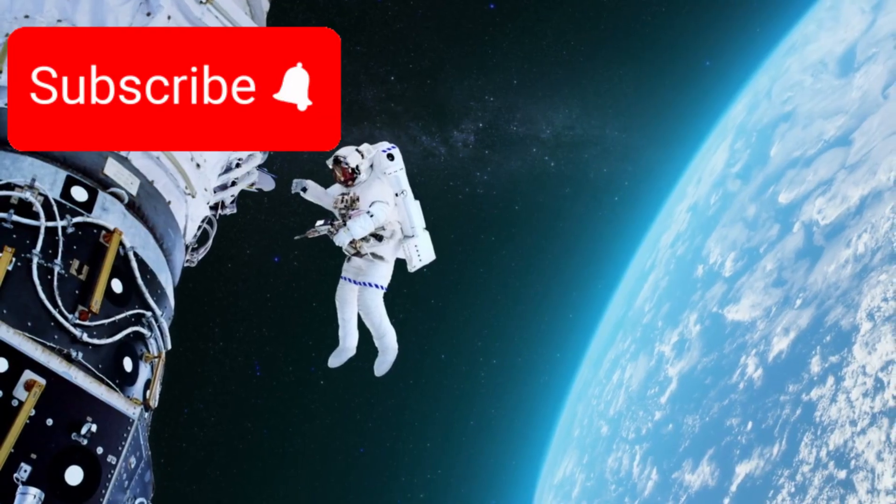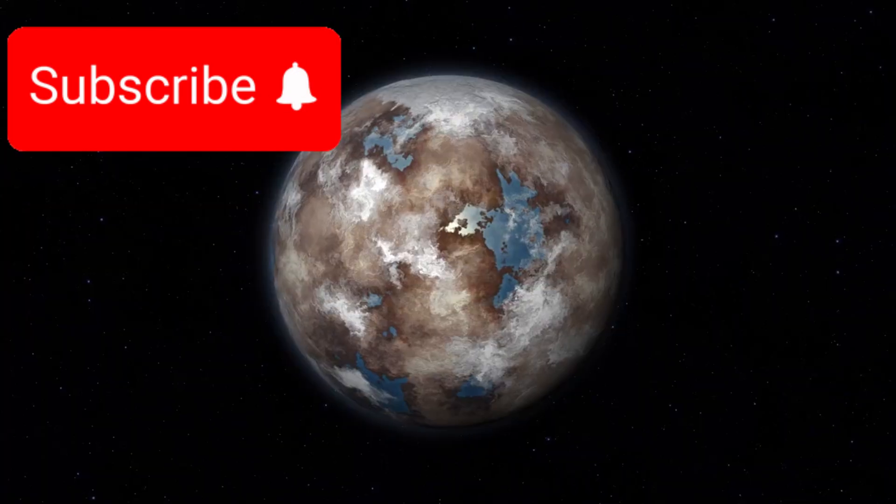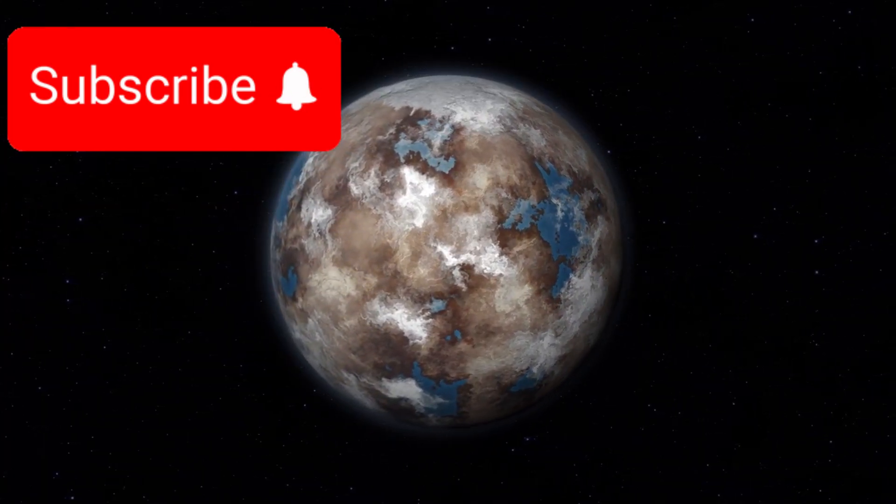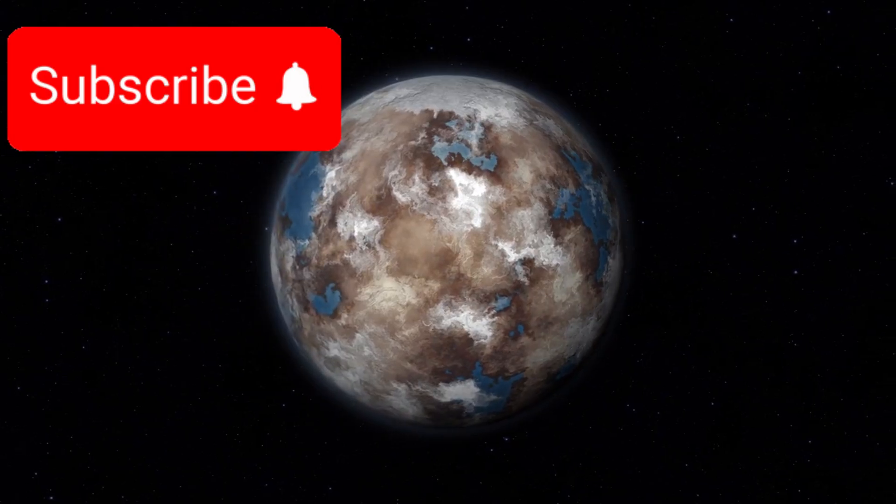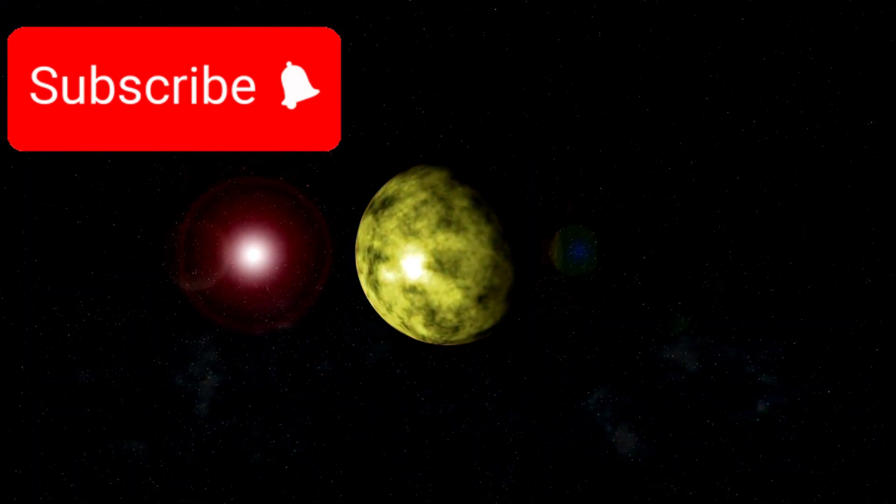David Kipping, an acclaimed astronomer from Columbia University, described Proxima Centauri b as a highly intricate and unusual planet—a world that challenges our current models of planetary behavior.